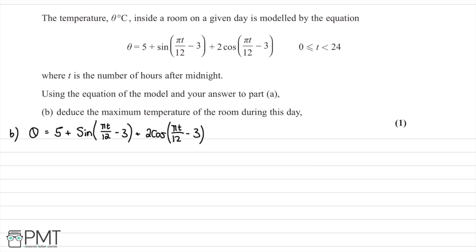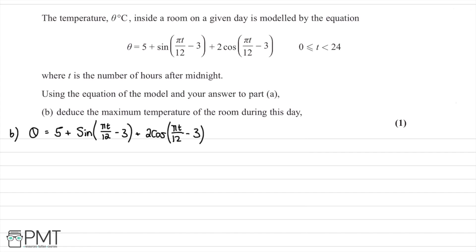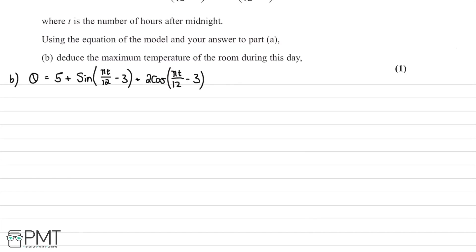In part B, we're told the temperature theta in degrees Celsius is modelled by theta equals 5 plus sin(pi t over 12 minus 3) plus 2 cos(pi t over 12 minus 3), where t is the number of hours after midnight. We're asked to use the model and our answer to part A to deduce the maximum temperature. We notice sin of something plus 2 cos of something, so we let x equal pi t over 12 minus 3 and use our part A answer.